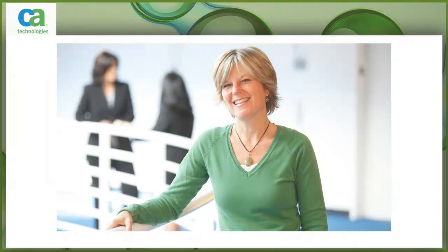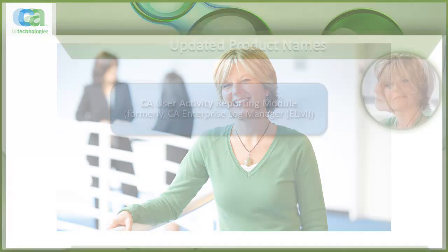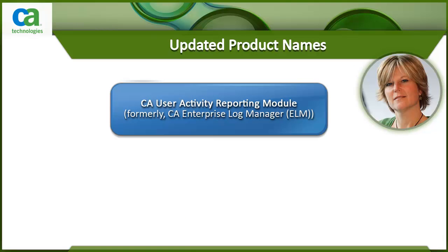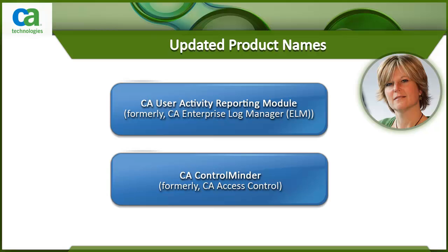Before we begin, I would like to remind you of the updated product names. CA Enterprise Log Manager has now been renamed as CA User Activity Reporting Module or UARM. And CA Access Control is now named as CA Control Minder.